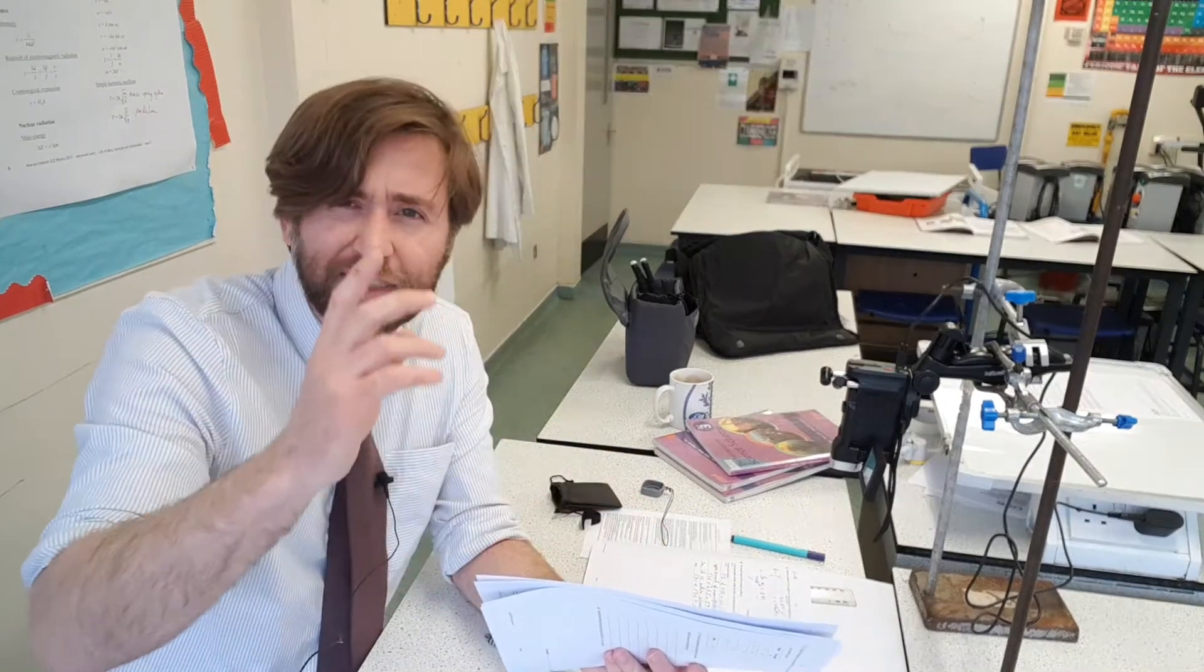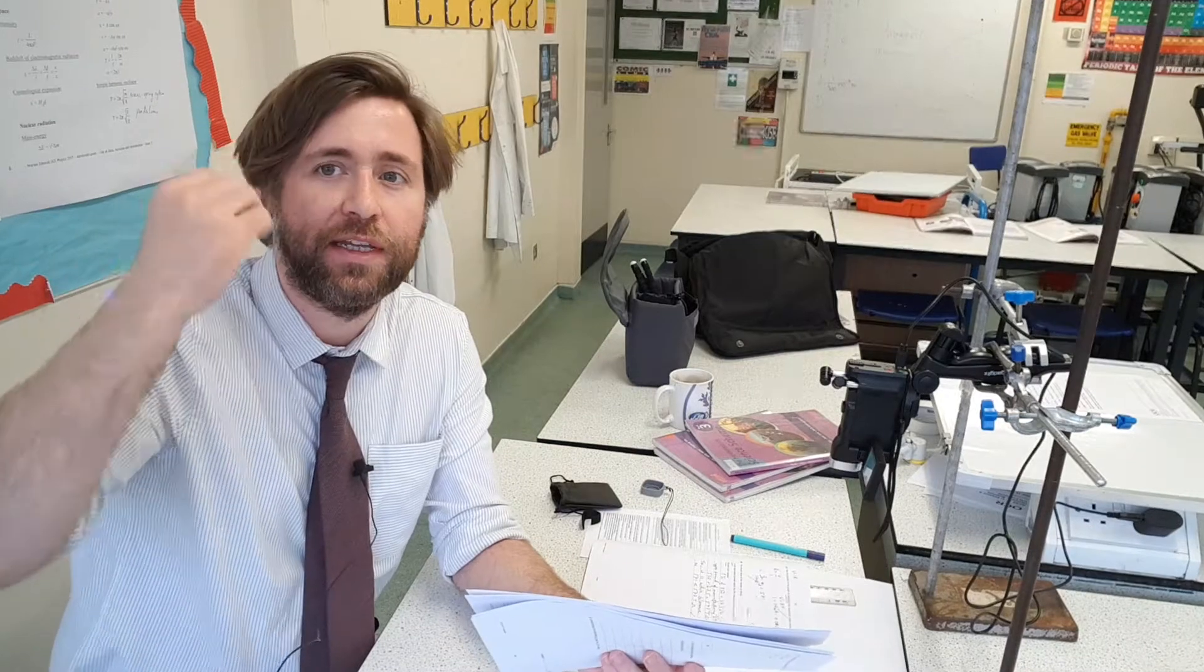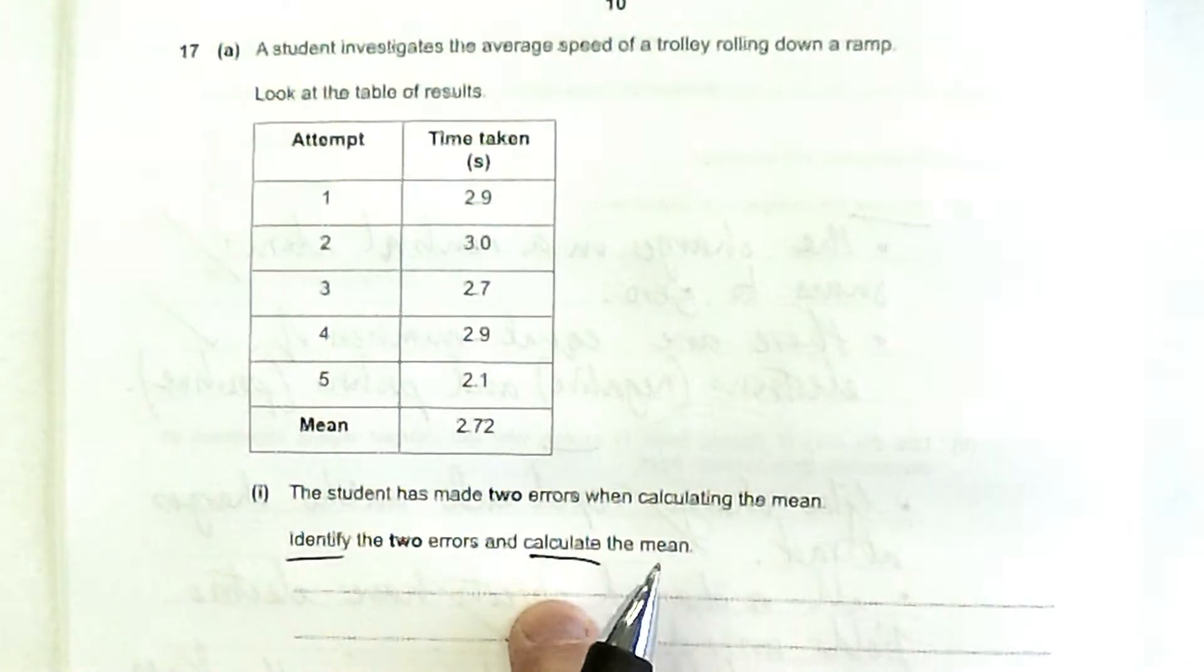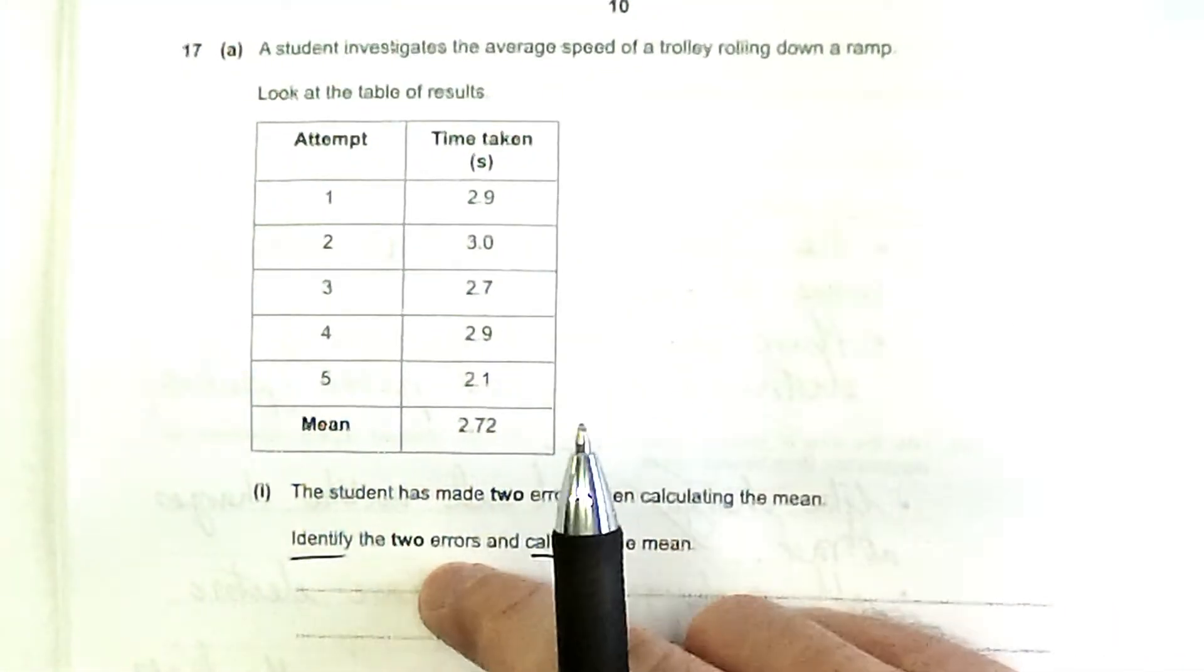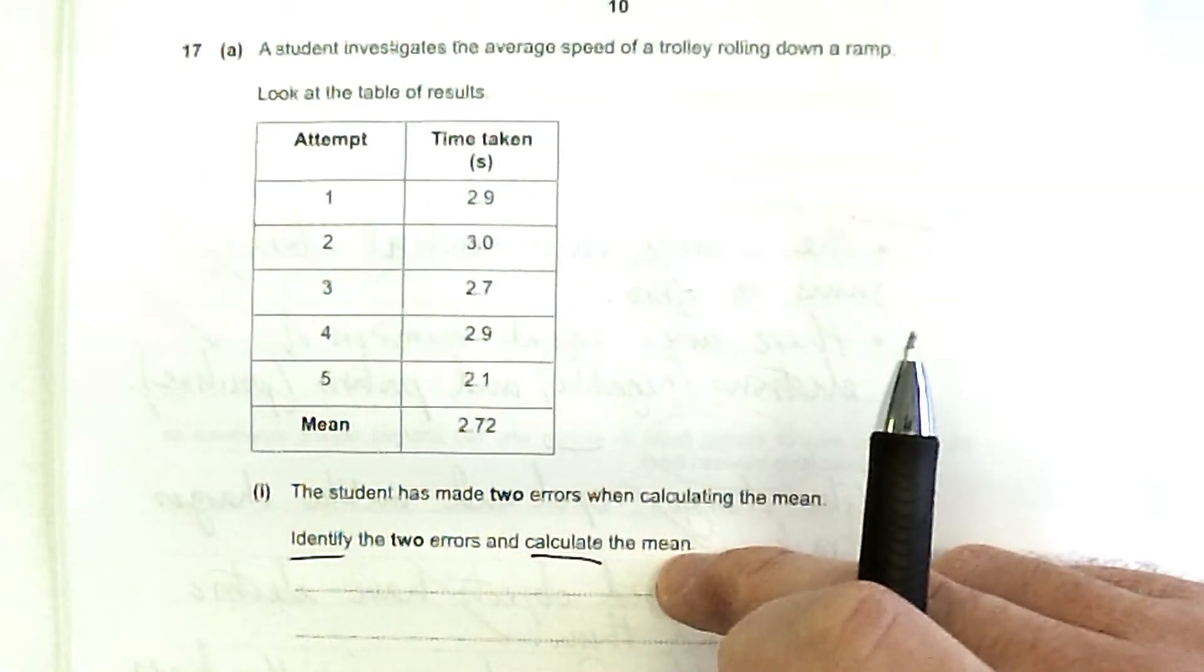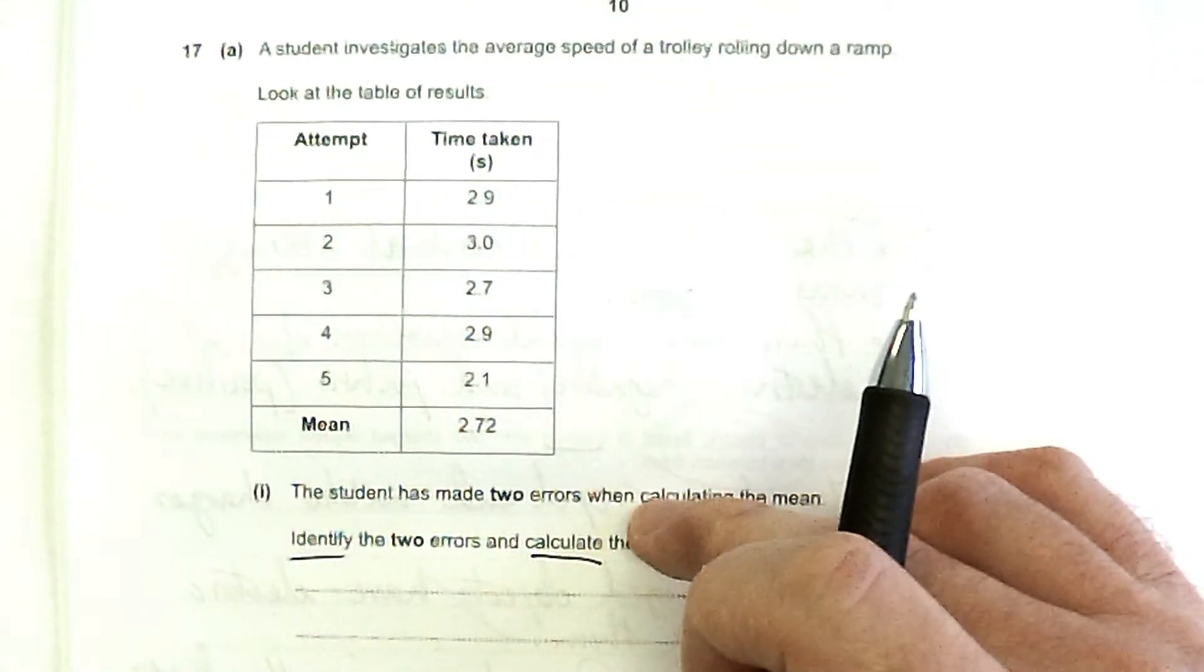Do pause it when the question appears and have a read and have a go yourself, or just at least have a think about it before you listen to me explain because that's a better way to make sure that you're going to remember those key points. Now you see how that's a really important time to underline the command words. So they're basically a mark for each error and two marks for calculating the mean.